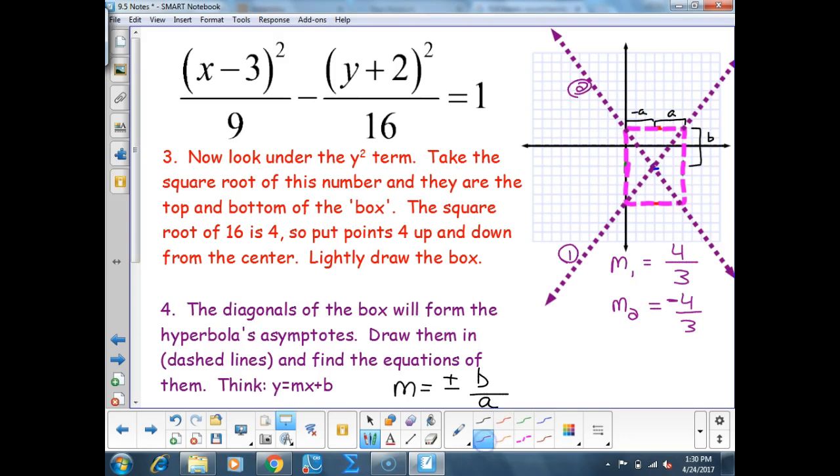In this particular case, my first asymptote is going to be y equals 4/3 x minus 6. My second asymptote is going to be y equals negative 4/3 x plus 2. Sometimes it's nice, sometimes it's not nice. This time it was nice.